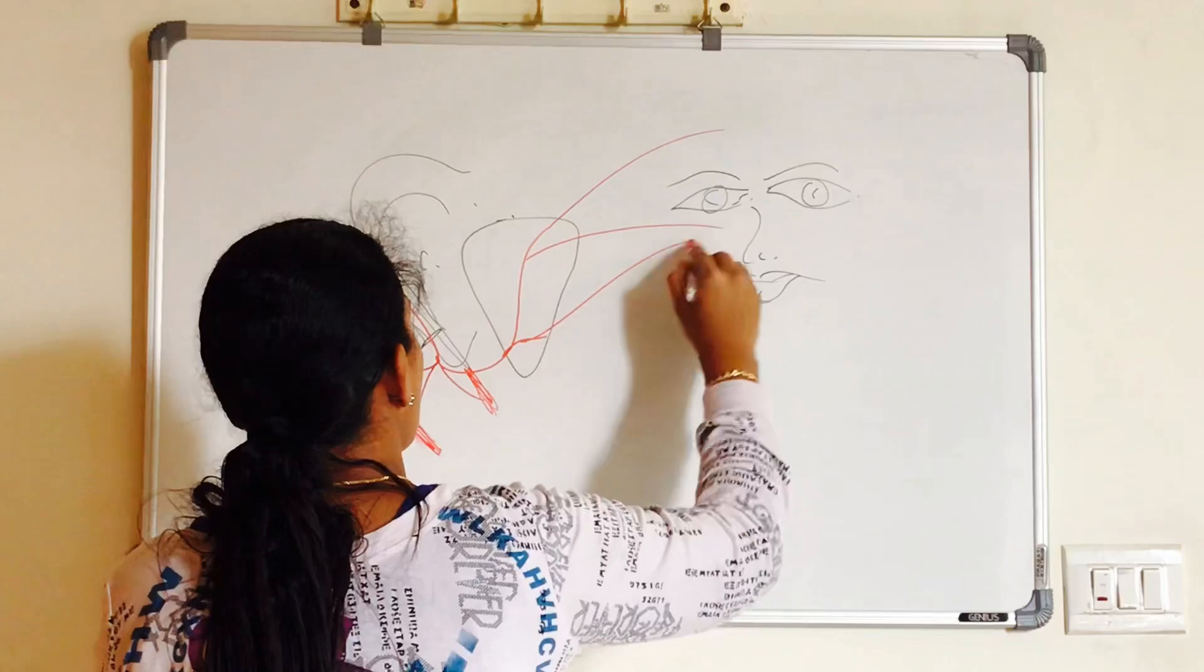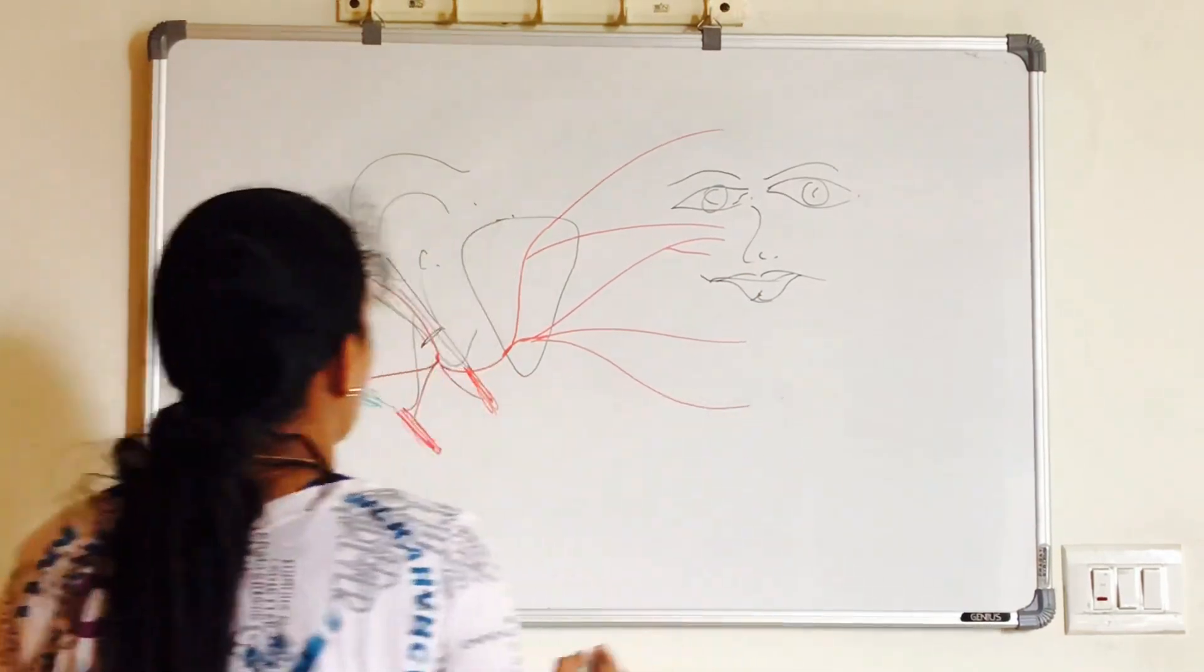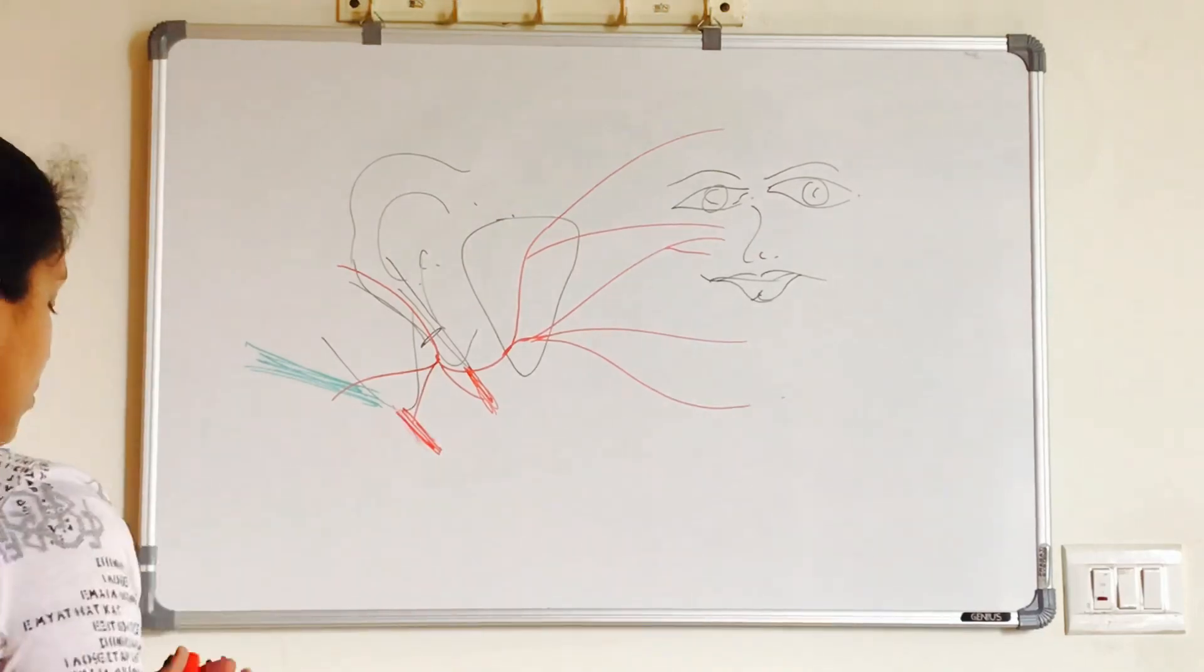Temporofacial gives temporal branch, zygomatic branch. Cervicofacial gives buccal, marginal mandibular and cervical branches.